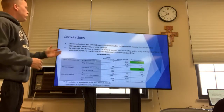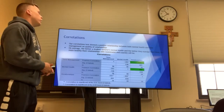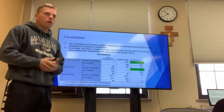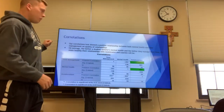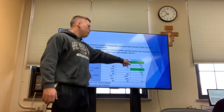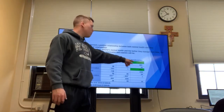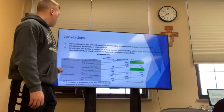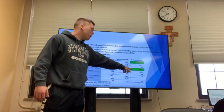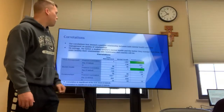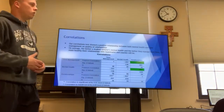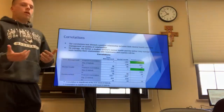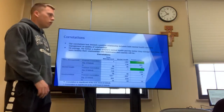Our correlations test showed a positive relationship between both mental health and time management on a student athlete's quality of relationships. As you can see, this number tells us that as time management goes up, their relationships get better, and as mental health gets better, their relationships also get better. So on average, the better a student athlete's mental health and the better they manage their time, the more healthy their relationships will be with teammates and coaches overall.